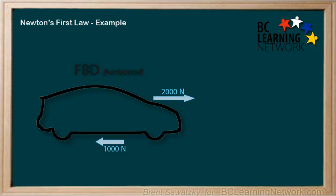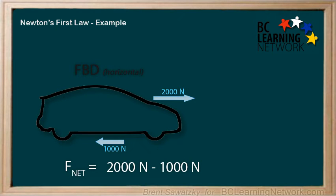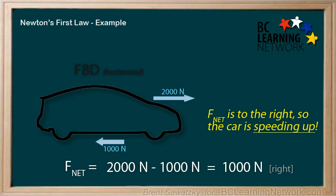The friction forces include all the forces within the car that resist it moving forward. That would mean we have a net force of 2,000 Newtons for the applied force minus 1,000 Newtons for the friction force in the opposite direction. So we have 1,000 Newtons to the right. We have a net force, so the car's motion will change — from sitting still to starting to go fast down the road.